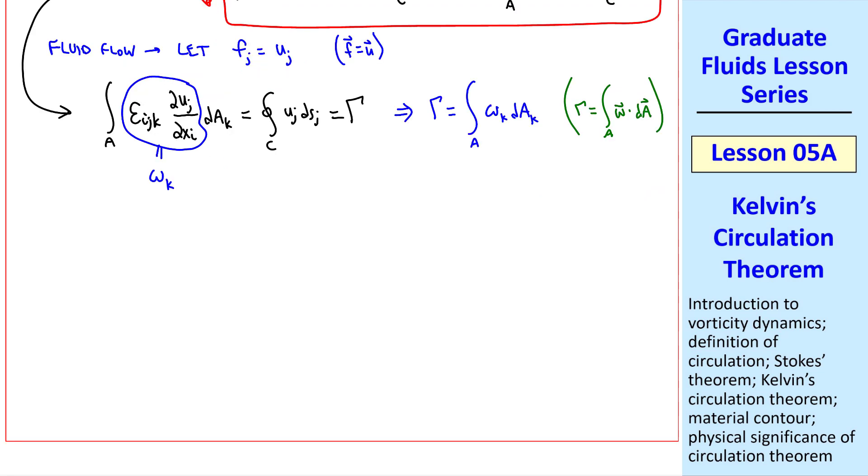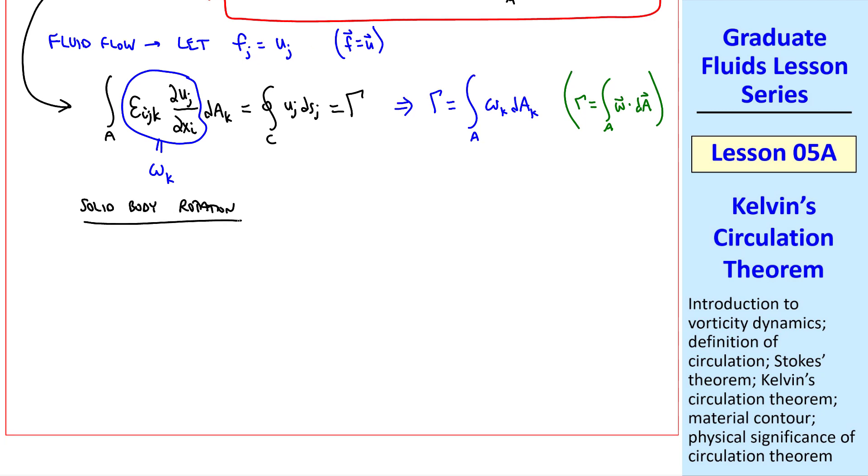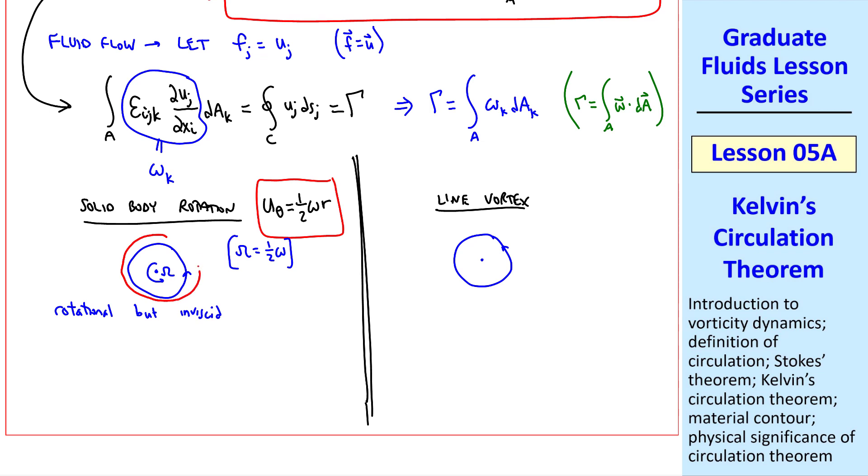Now let's compare two circular flows as we did previously, solid body rotation and a line vortex. Both of these have circular streamlines around the axis of rotation. But for solid body rotation, u theta is one-half omega times r, where the angular velocity omega is one-half lowercase omega. As we mentioned in a previous lesson, this flow is rotational but inviscid. If we take a circle around this as our closed contour c, then gamma can be found by its definition, which would be the integral from 0 to 2 pi of one-half omega r times r d theta. Where at any location along this curve, ds is r d theta. If you do this integral, it turns out to be pi r squared times omega.